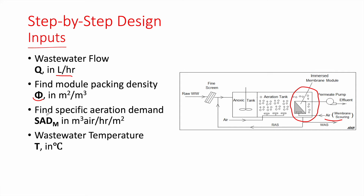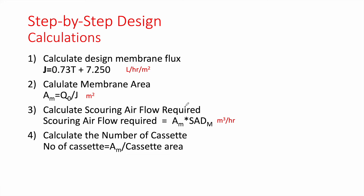Then we need the specific aeration demand SAD, which is typically 0.3 cubic meters of air per hour per square meter. Finally, we need the wastewater temperature T in degrees Celsius. With those inputs, we proceed to the step-by-step calculations.